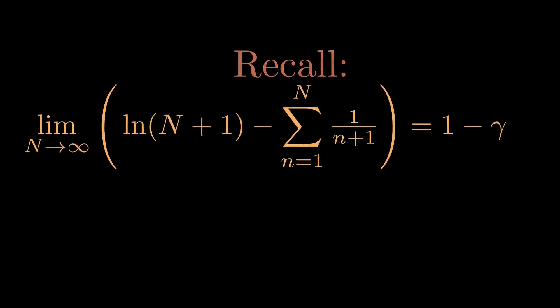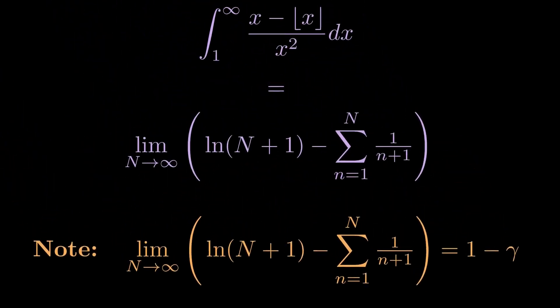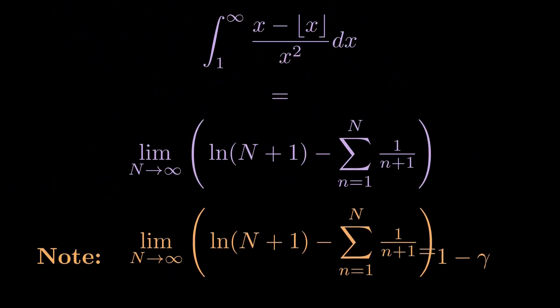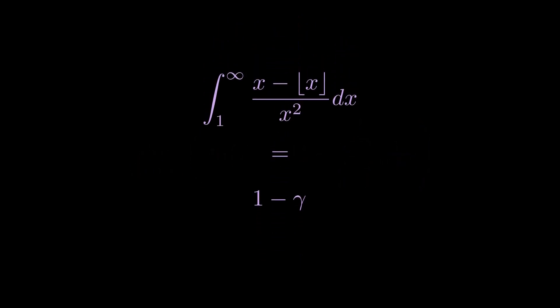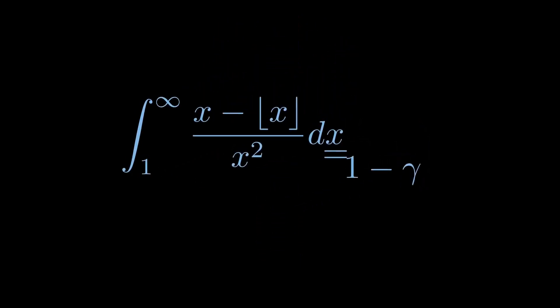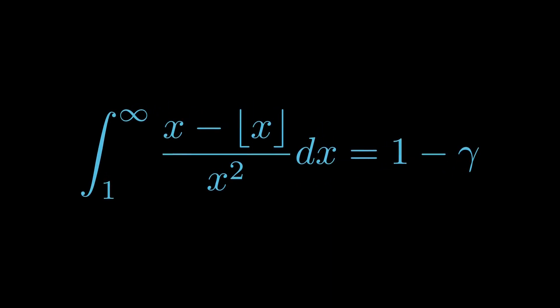So we have now determined that our original integral, the integral from 1 to infinity of x minus the floor of x over x squared, is equal to 1 minus gamma, 1 minus the Euler-Mascheroni constant.